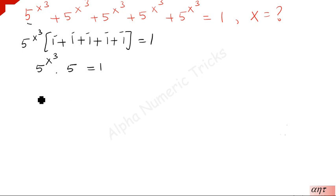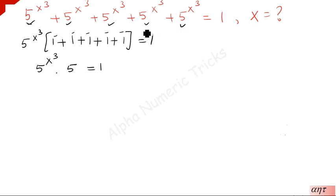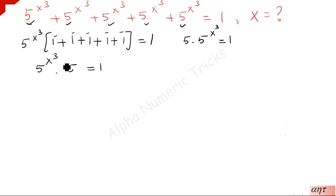From this, how many times is the number repeated? 1, 2, 3, 4, 5 times. So you can write: 5 times phi to the power x cube is equal to 1. Since the base is the same, we can add the powers. So phi to the power x cube plus 1 is equal to 1.